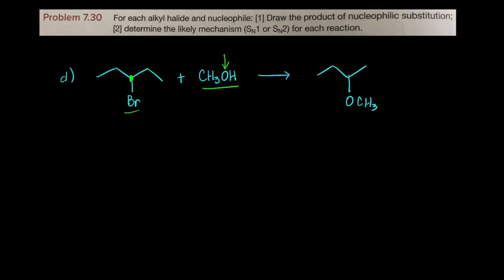Before we draw the mechanism, it's absolutely critical to figure out if this is SN1 or SN2. This carbon is connected to two carbons, so we say that this is a secondary alkyl halide. Secondary alkyl halides can react by SN1 or SN2, so we need to look at other information.